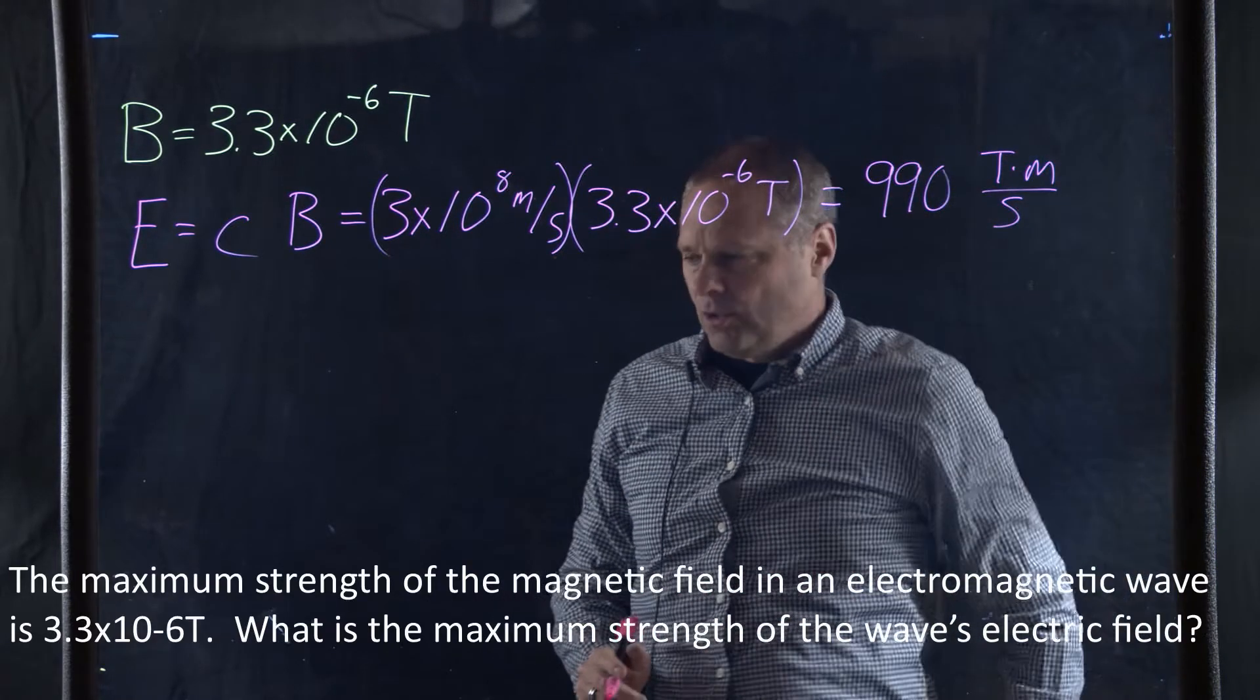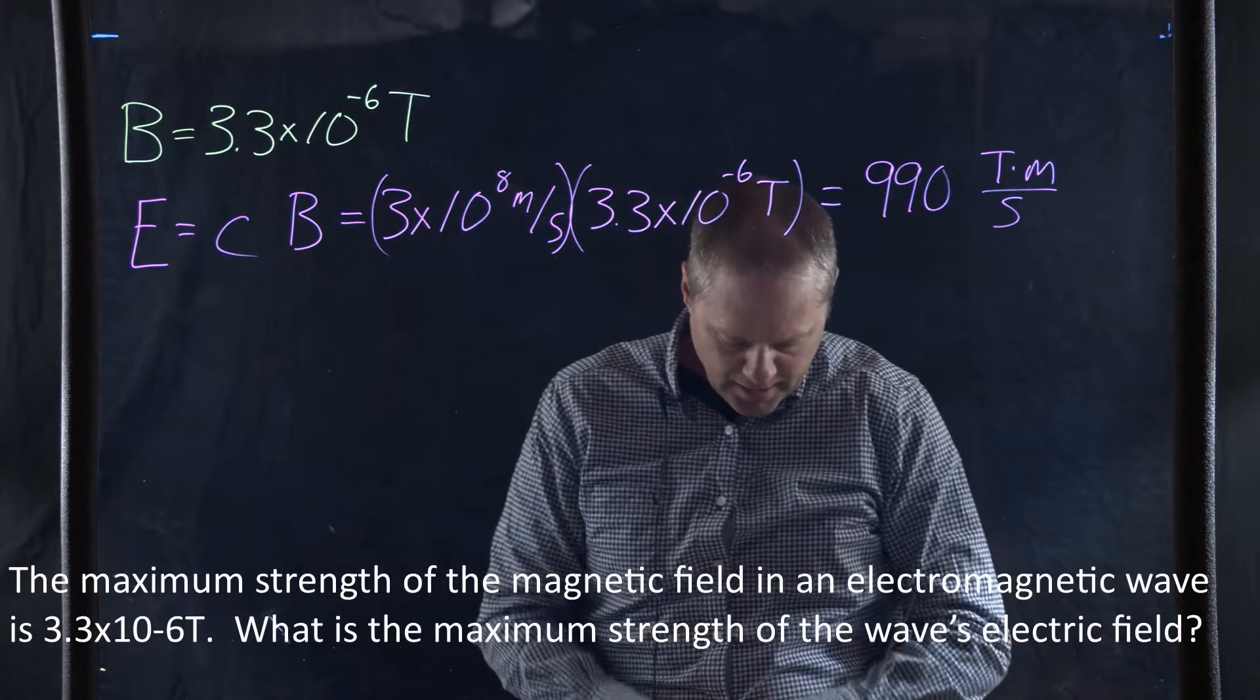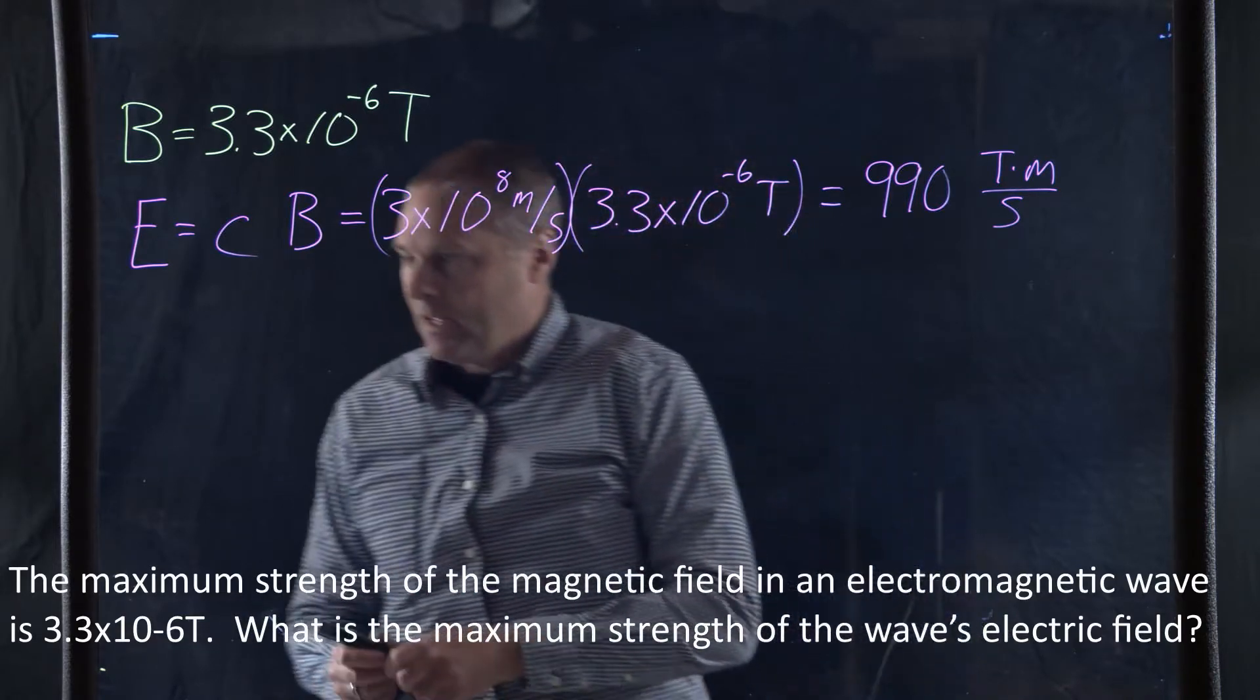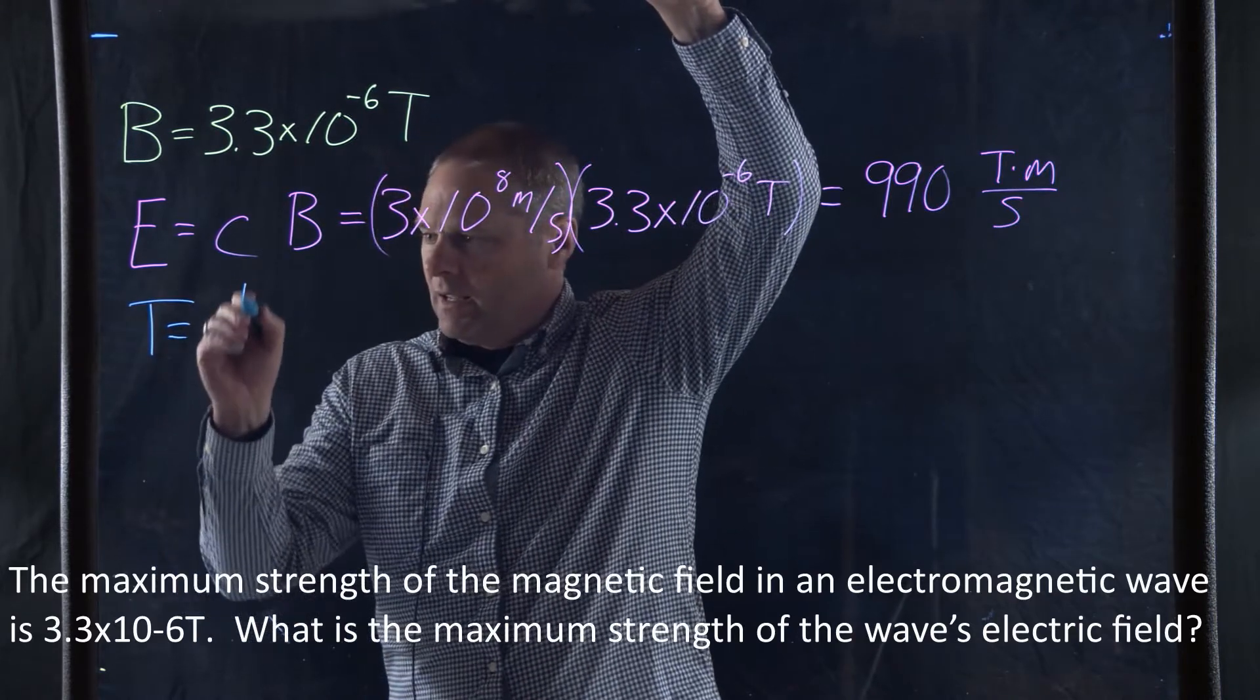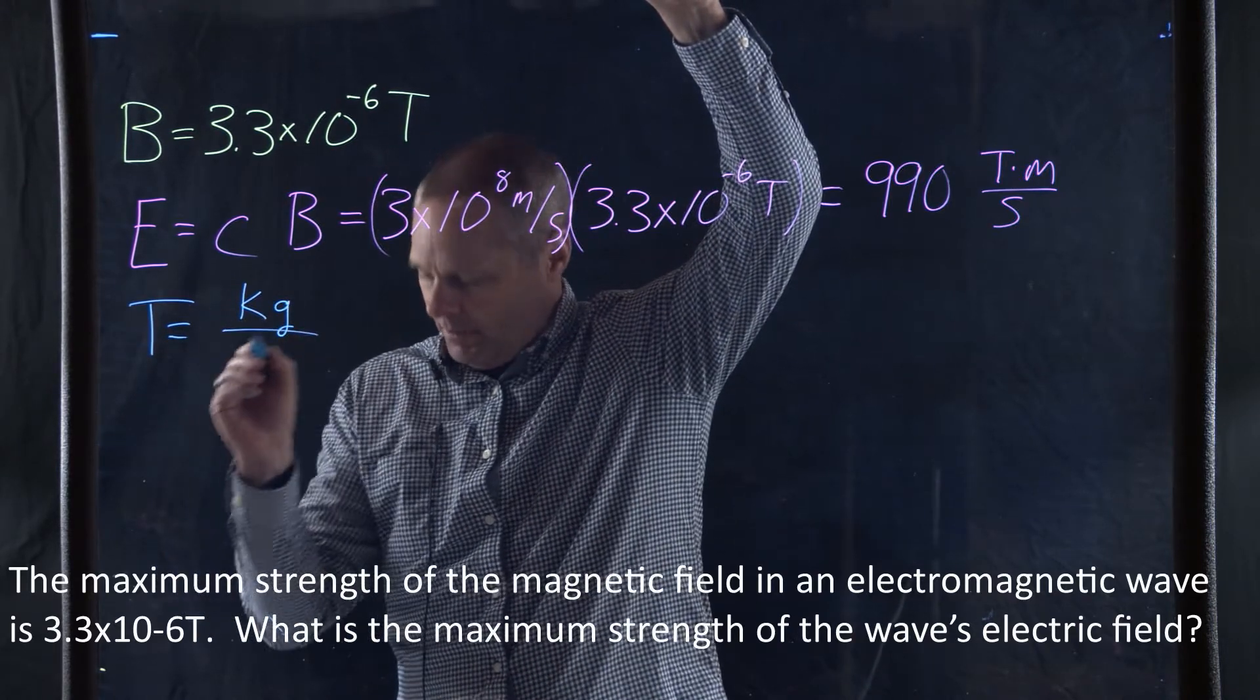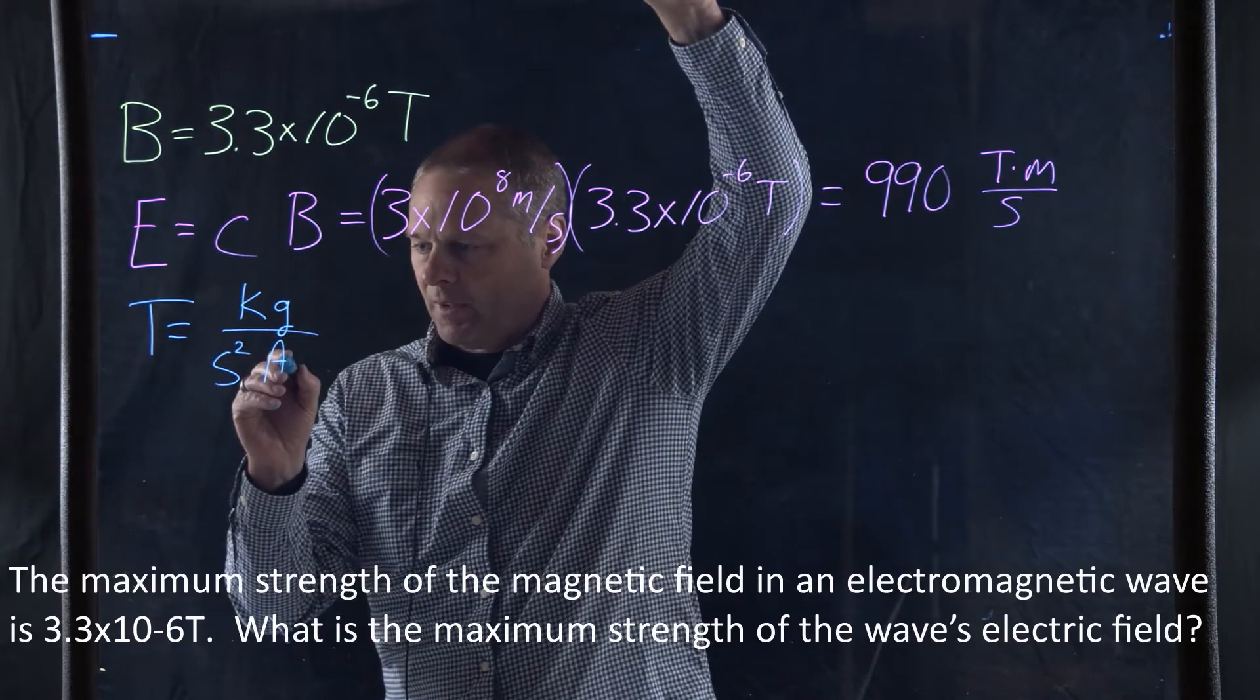But let's look at this unit of Tesla meter per second. Now, a Tesla is a kilogram per second squared ampere. That's a Tesla.